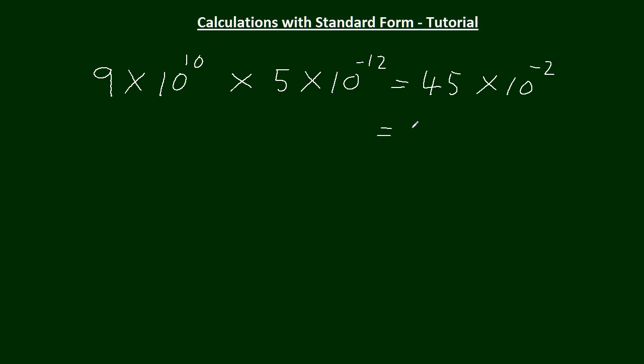Now this one, 9 fives, 45. Add the indices, 10 add minus 12, 10 to the minus 2. We've got to change this to standard form. So it's going to be 4.5 times the 10, times the 10 to the minus 2. So that's going to be, because we add the indices here, 4.5 times 10 to the minus 1.